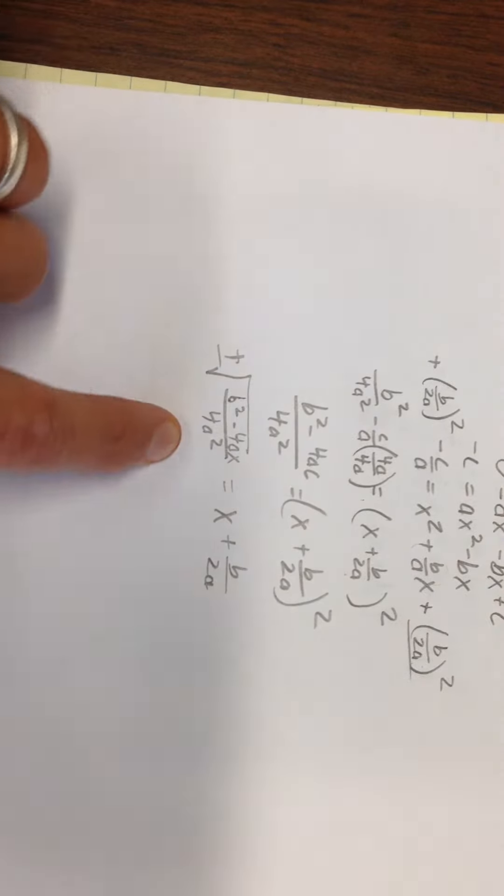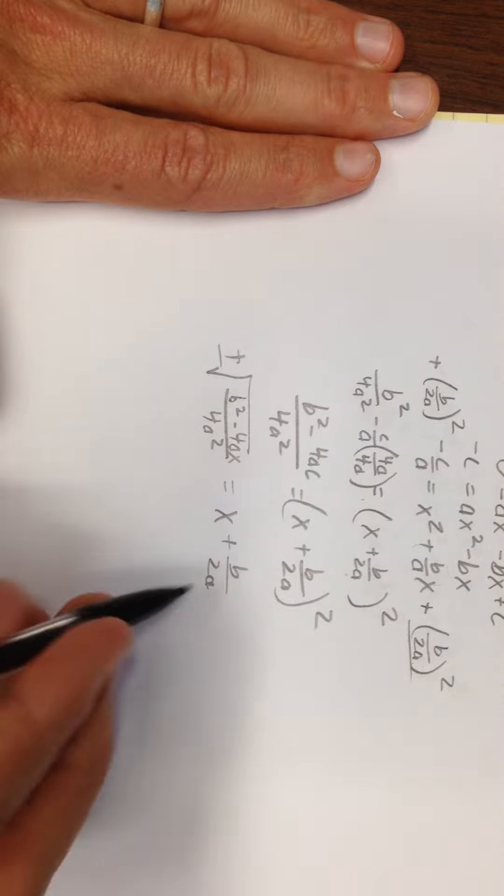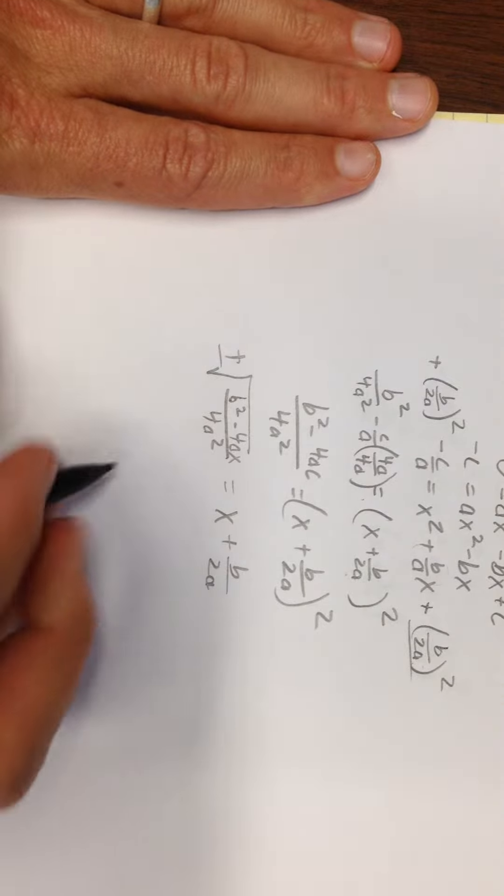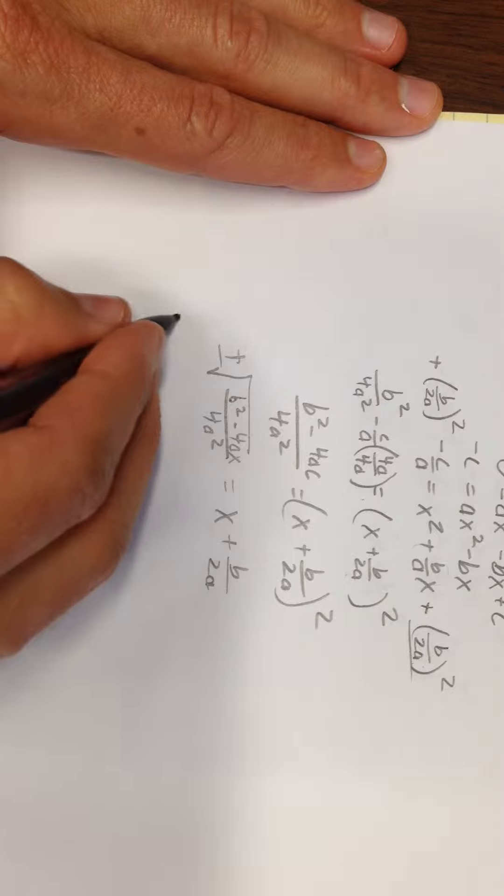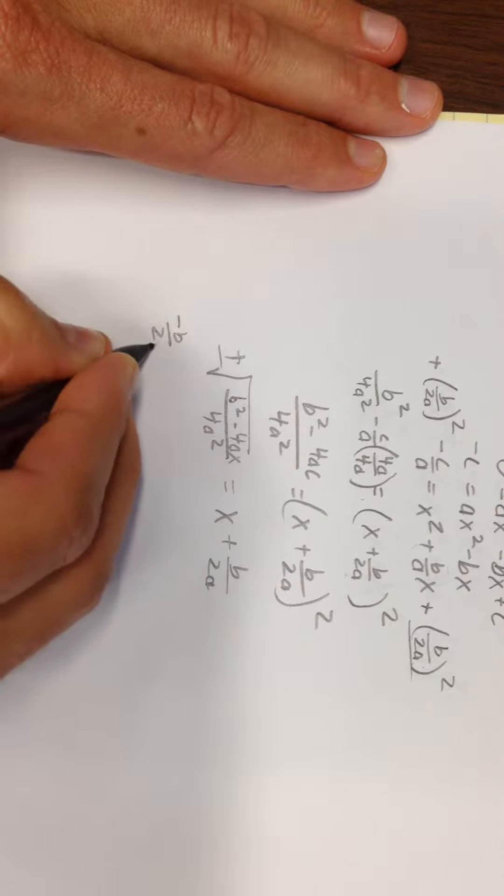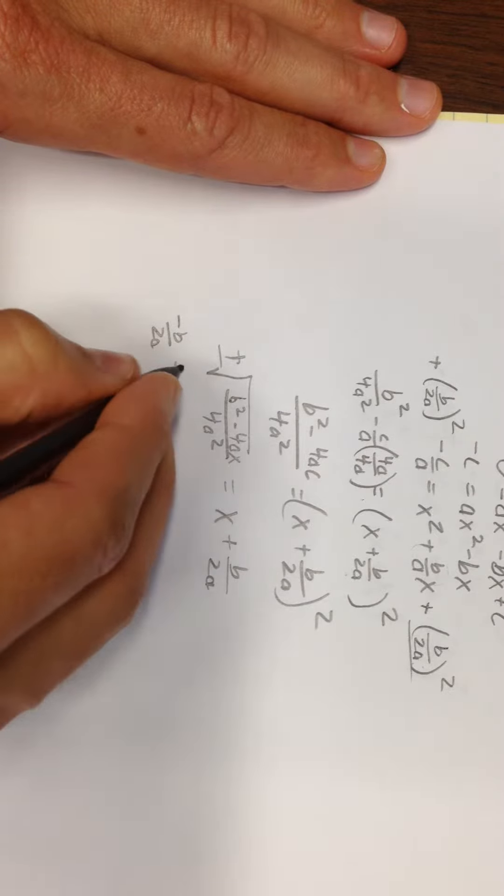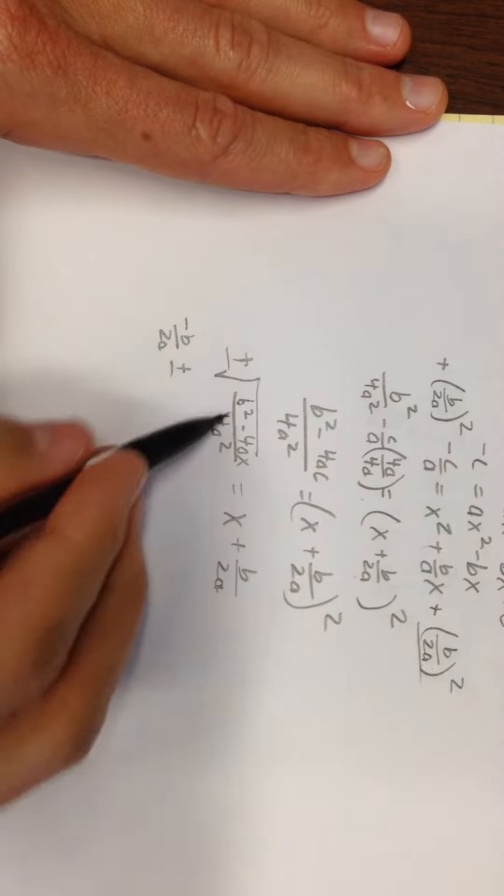So one side or the other needs it. I'll put it on the side far from the x. Now this b/2a, I'm going to move to the left side, -b/2a plus or minus. What can I do with this term?